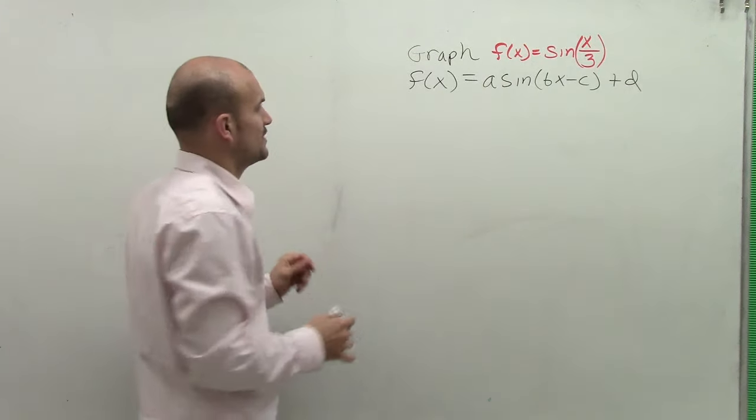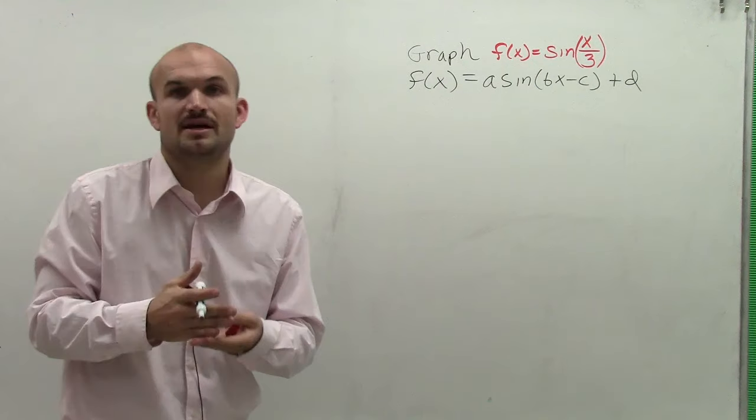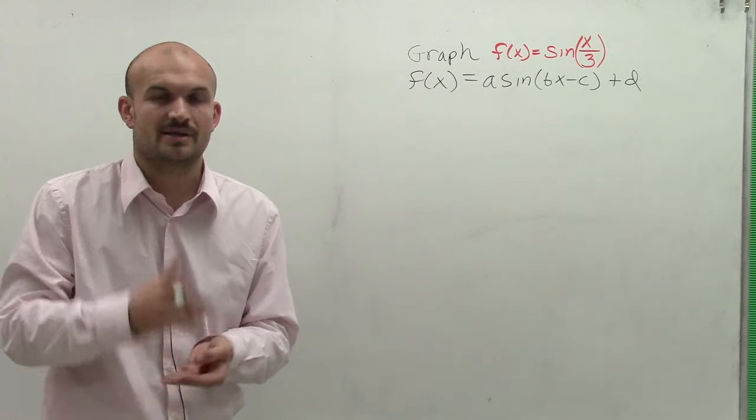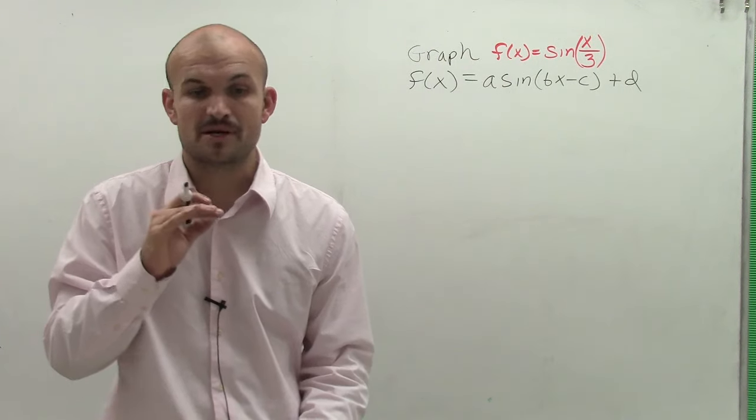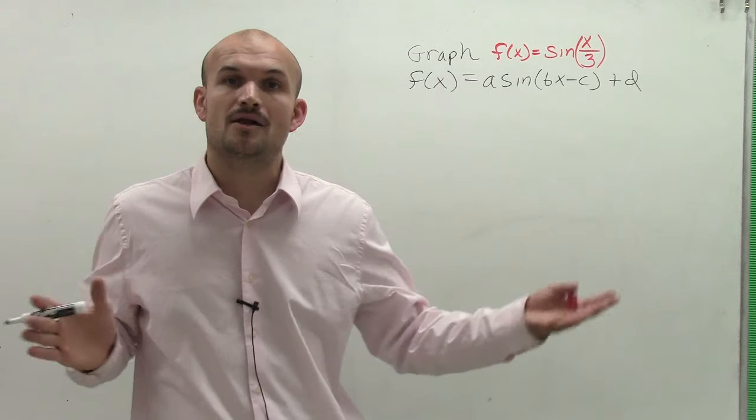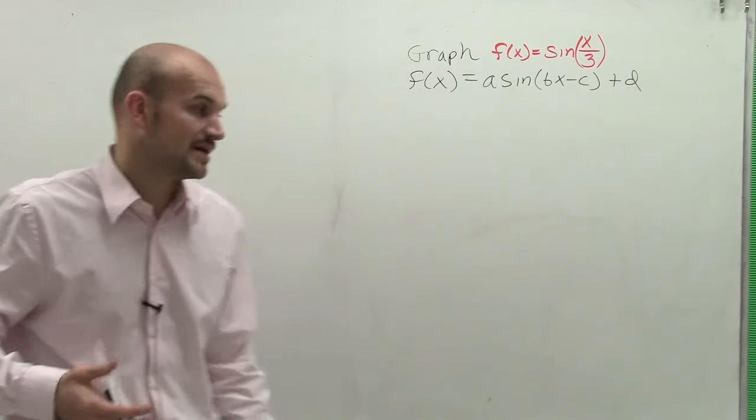So the main important thing is, remember, we always want to determine, the first thing I always like to do is determine your amplitude and your period. That's going to be the most important points. Because remember, the amplitude is going to be your half distance from your maximum and your minimum. And your period is going to be how long it takes for your graph to complete one cycle.